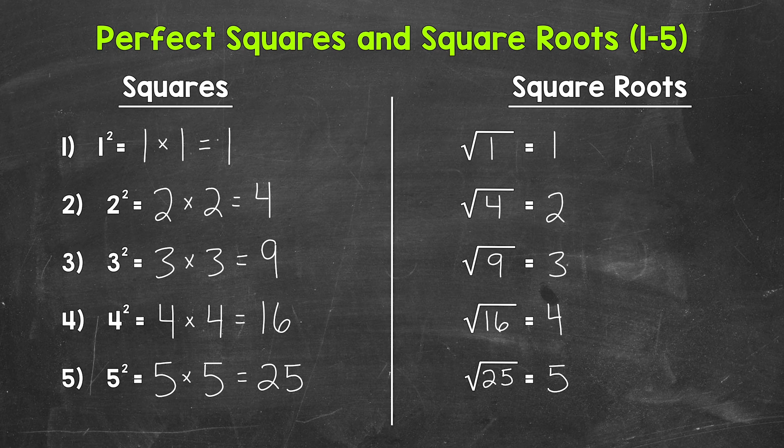So there you have it — the first 5 perfect squares and square roots. I would recommend getting down and knowing these 5. Once you know these 5, work to get down 6 through 10. This is really going to help with working with any squares or square roots moving forward. I dropped the link to the 6 through 10 perfect squares and square roots video down in the description, along with some other related videos.